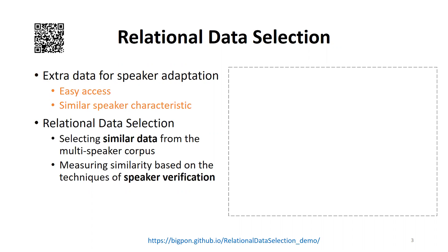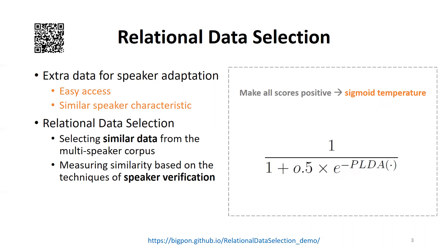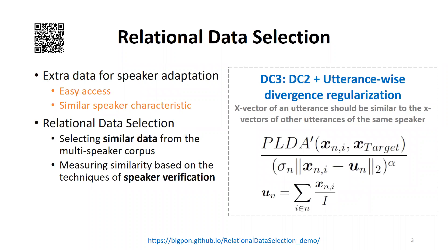The proposed method includes three steps. First, we measure the speech similarity using PLDA and X-Vector. To make our score positive, a sigmoid temperature is applied adaptively. Second, we prune unstable candidate speakers. Third, we prune outlier utterances of each candidate speaker.